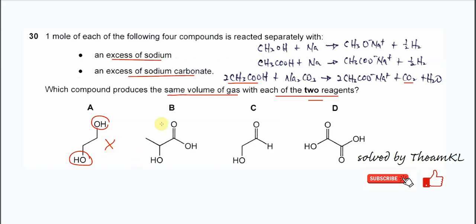For B, there is one carboxylic acid and one OH. The OH and carboxylic acid can react with the sodium. Then it will form one mole of the hydrogen gas.